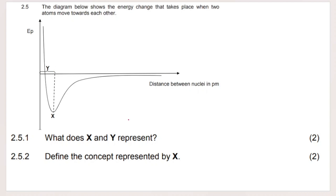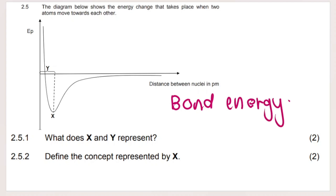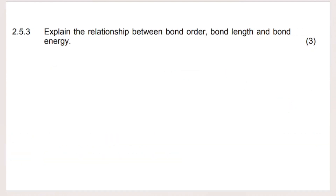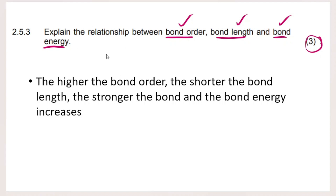They want us to define bond energy — X on the graph. The next question asks us to explain the relationship between bond order, bond length, and bond energy (3 marks). The answer: the higher the bond order (single → double → triple bond), the shorter the bond length. Shorter bond length makes the bond stronger, so bond energy increases — more energy is needed to break those bonds.